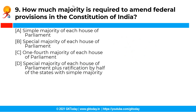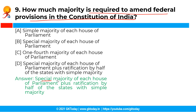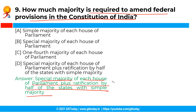The next question is: how much majority is required to amend federal provisions in the Constitution of India? The correct answer is option D — special majority of each house of parliament plus ratification by half of the states with simple majority. If a bill seeks to amend the federal provisions of the Constitution of India, it must be passed by both houses of parliament with special majority and must also be ratified by legislatures of half of the states with simple majority.